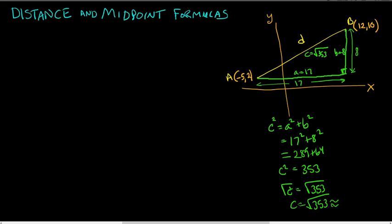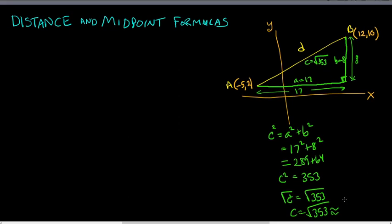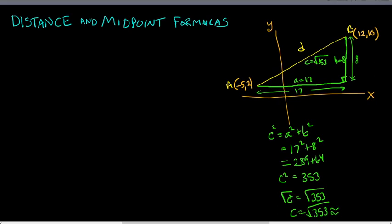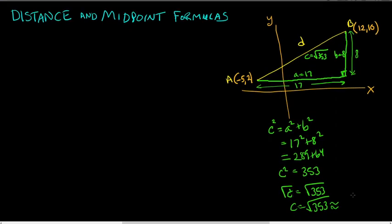We can approximate: enter 353 and hit the square root button. It's about 18.8. I didn't give you units — it could be miles, kilometers, feet, or whatever. It's just a distance, so we'll leave it as a number for now.